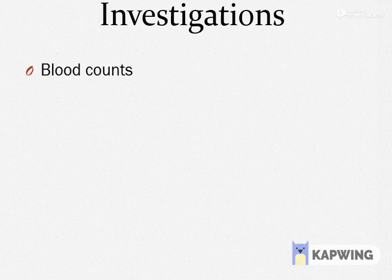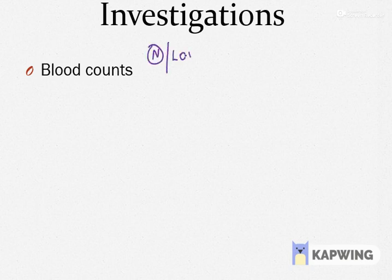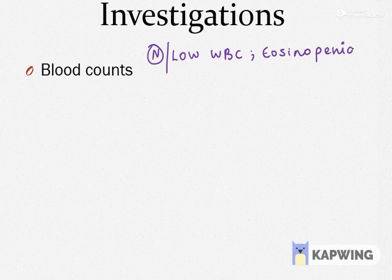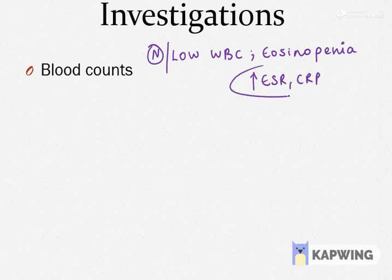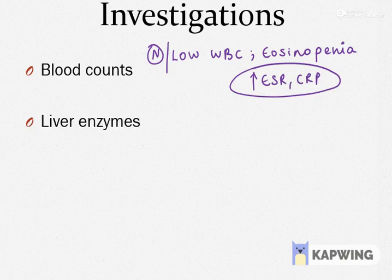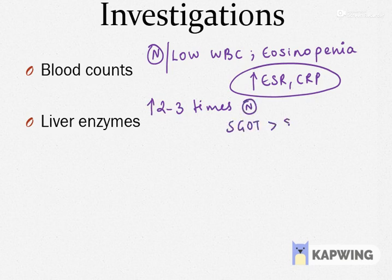Coming to the investigations in case of enteric fever — as with any other fever, when you do the blood count, you will notice a characteristic finding. Unlike other bacterial infections where you generally expect an increase in WBC count, here there is a normal or even low WBC count, and one more important finding noted is eosinopenia. It may appear even like a viral fever. But in enteric fever there is usually associated elevated ESR and CRP, which differentiate it from viral infection. If you do liver function testing, the liver enzymes will be elevated — not too much, but to around two to three times normal. For your exams, SGOT is typically more elevated compared to SGPT.